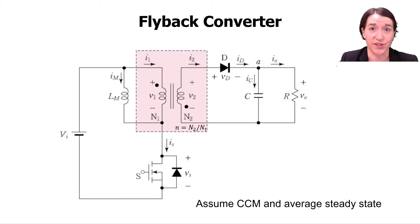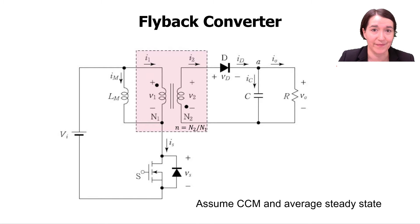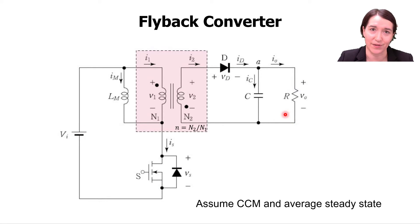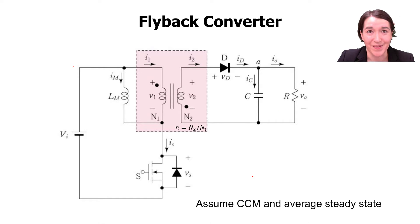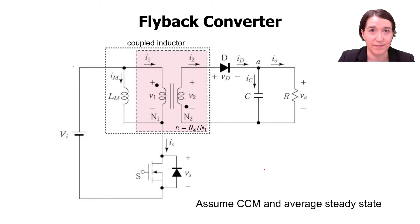Here we're talking about the flyback topology and how it operates, assuming operation in continuous conduction mode at average steady state. Here's the topology: there is a switch, a diode, the input voltage, and the output is a resistor load. The important component is the coupled inductor, which is an ideal transformer with an inductor in parallel.